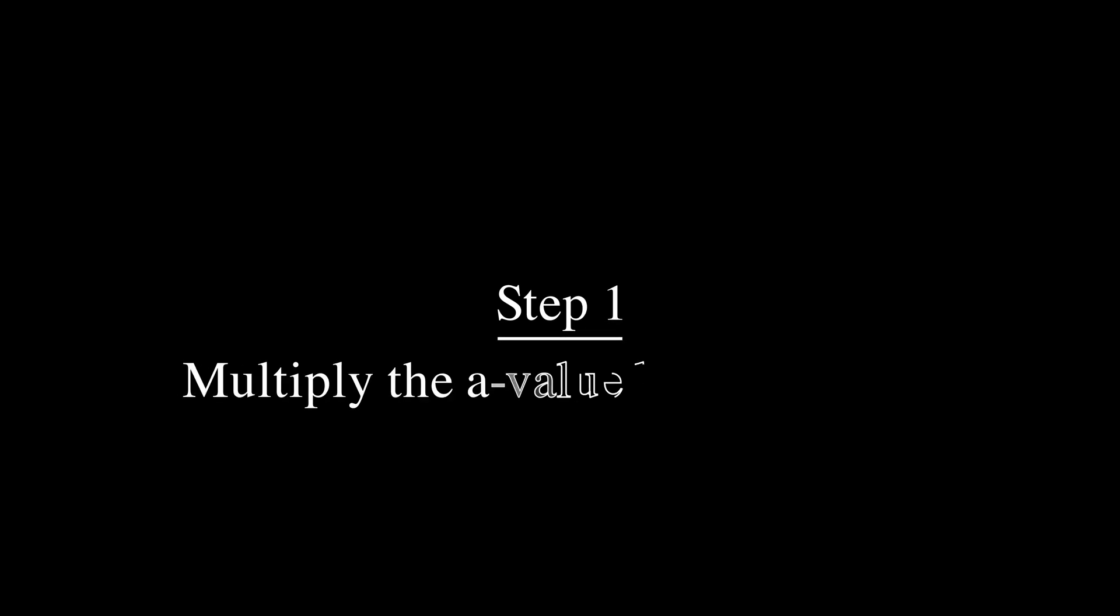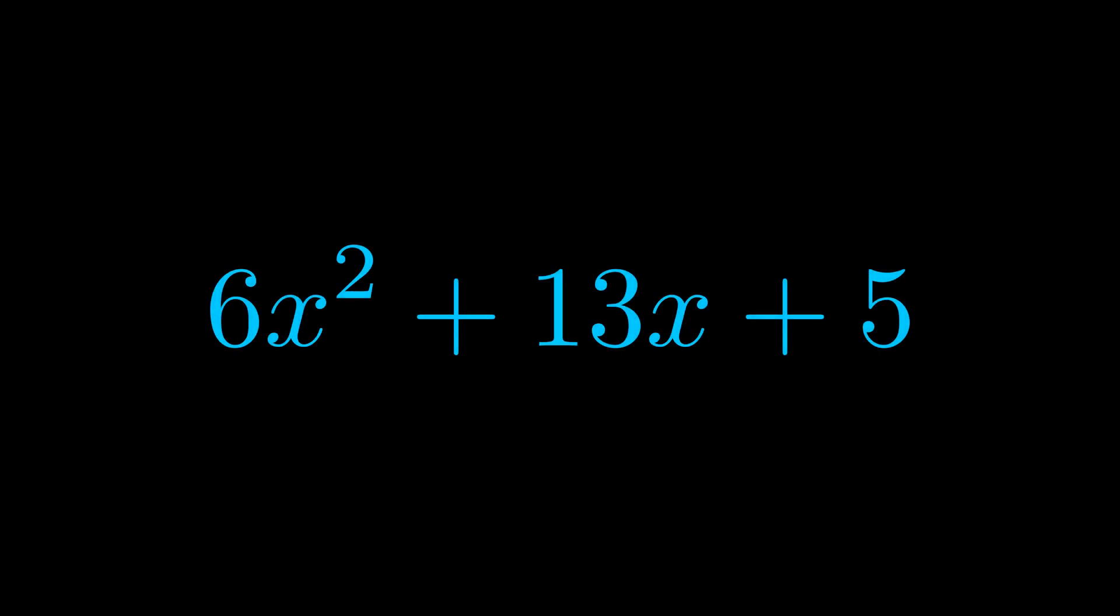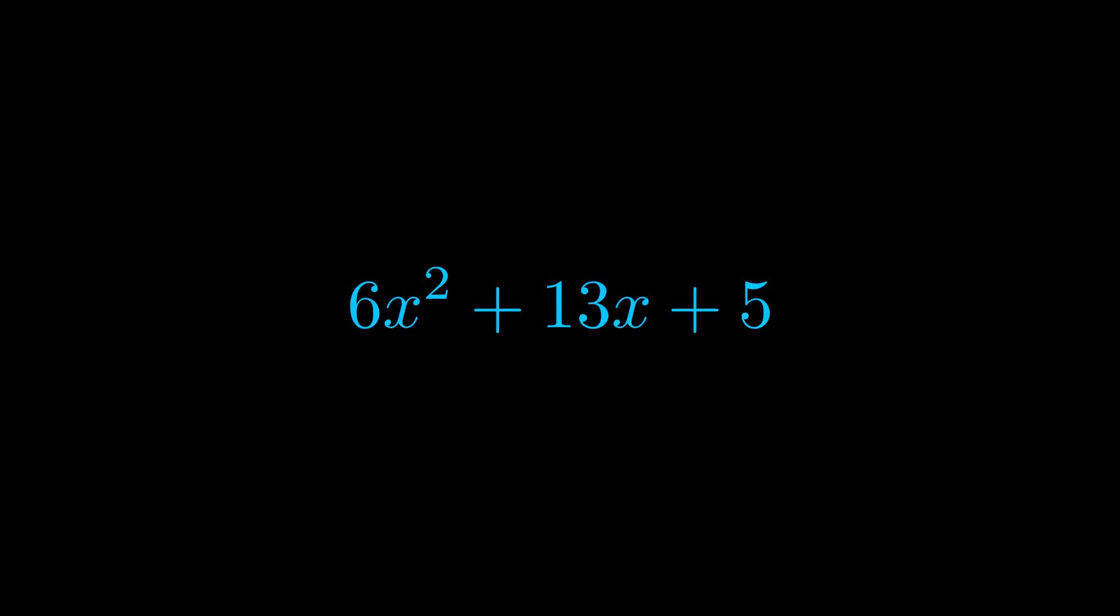Step one when factoring an equation of this form is to multiply the a value by the c value. Here we can see that our a value is the coefficient on the x squared term and our c value is the constant term.